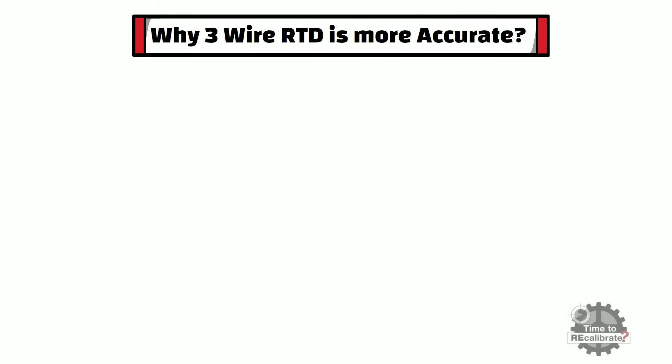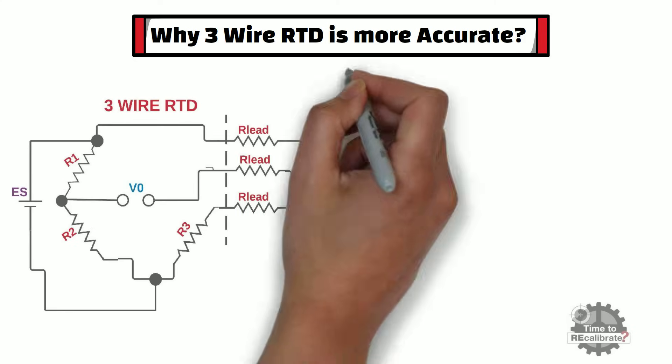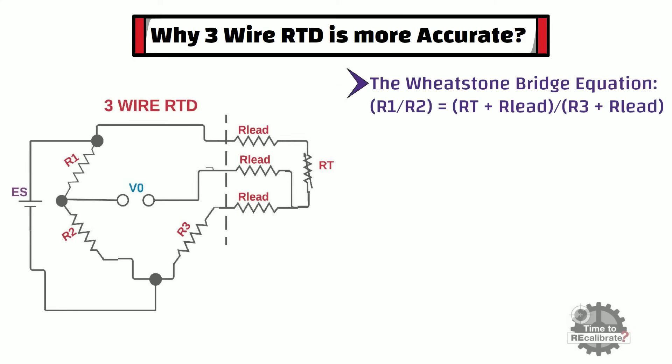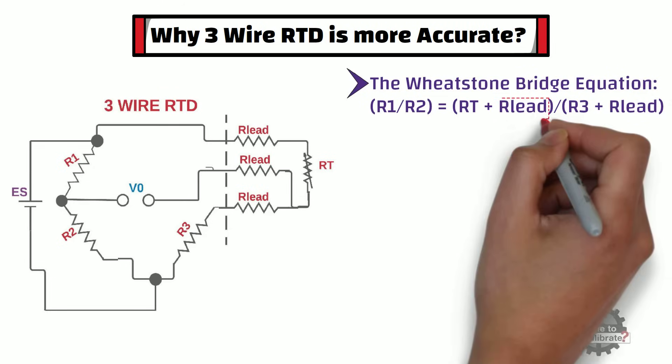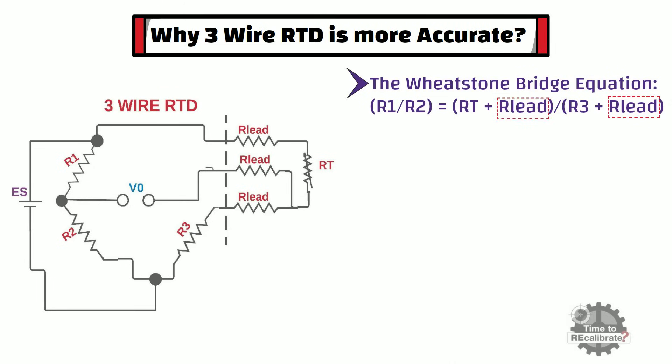Now let's understand in detail why 3-wire RTD is more accurate than 2-wire RTD. As you can see, this is the Wheatstone Bridge equation for 3-wire RTD. In this equation, both the numerator and denominator have the lead resistance, and because of this, the right-hand side ratio does not get affected due to lead resistance. In other words, both lead resistors eliminate each other's effects in the circuit.